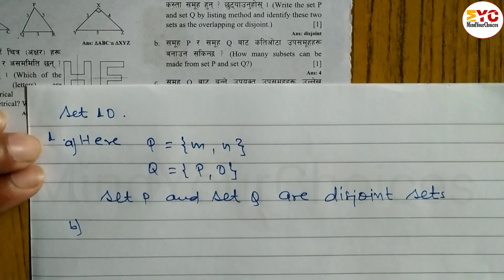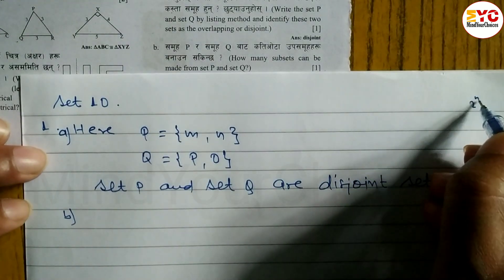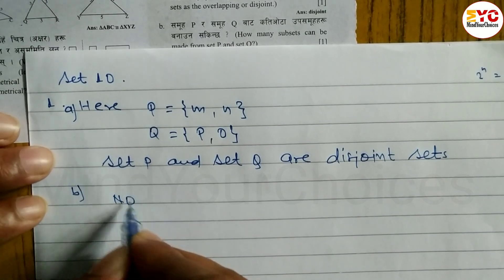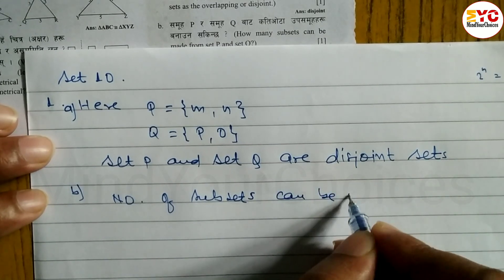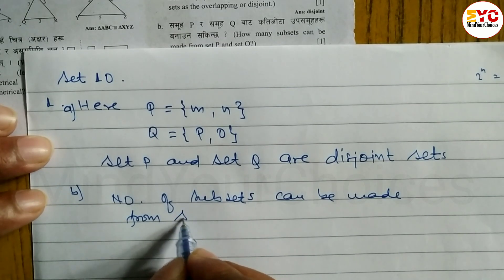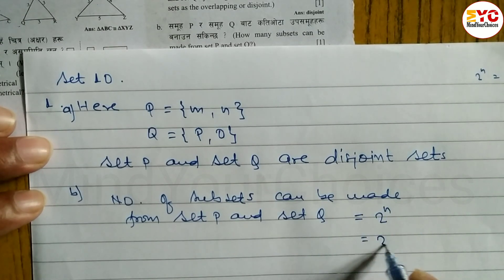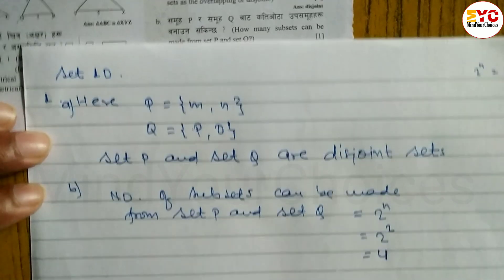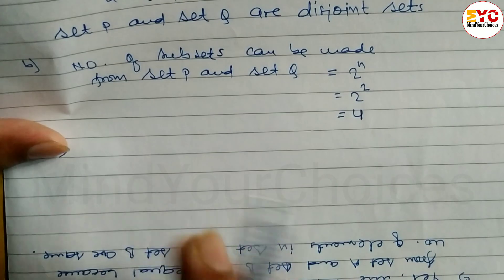Disjoint sets because there is no common element. For question B: how many subsets can be made from P and Q? Using formula 2 power n, P has 2 elements so 2 power 2 equals 4. Q also has 2 elements so 2 power 2 equals 4. We can make 4 subsets from set P and 4 subsets from set Q.